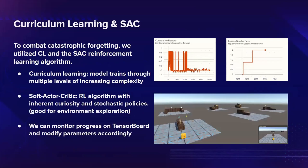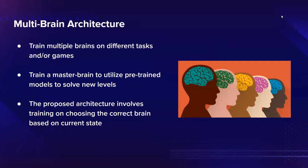One of the problems we kept facing was catastrophic forgetting — the model forgetting previous levels it trained on when being trained on newer levels. Two methods we found to solve this were curriculum learning and the SAC algorithm. Curriculum learning has the model train on levels of increasing difficulty. SAC resulted in extremely good results because it has an inherent curiosity module and utilizes stochastic policies, both of which are very useful for environment exploration as the model consistently tries different things. To assess performance, we use TensorBoard, which shows graphs detailing rewards obtained by the model and the different levels it was able to beat.